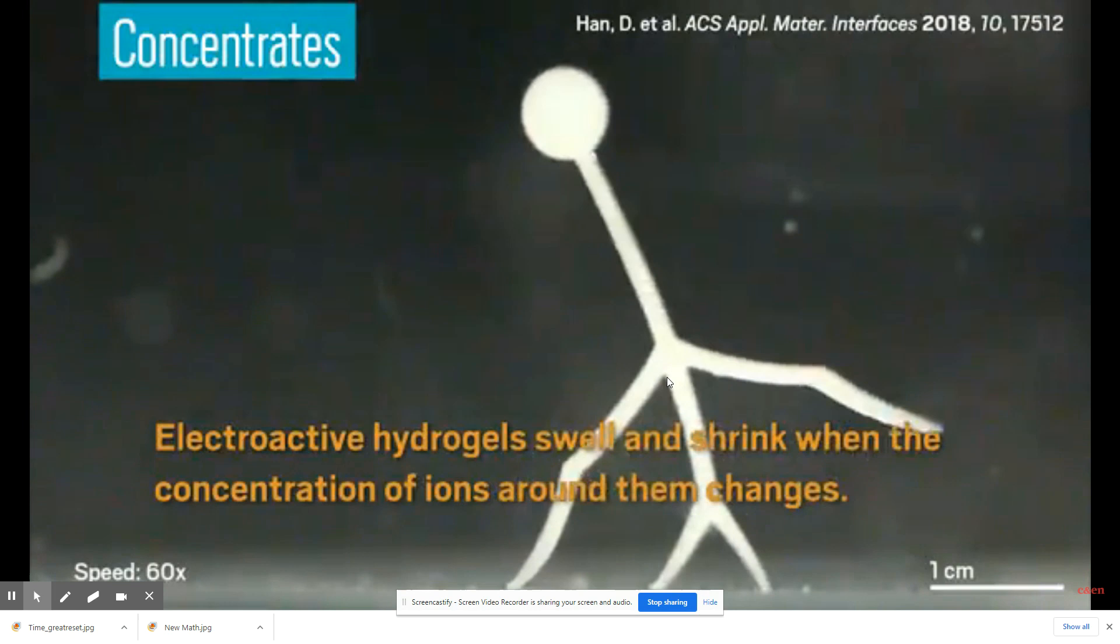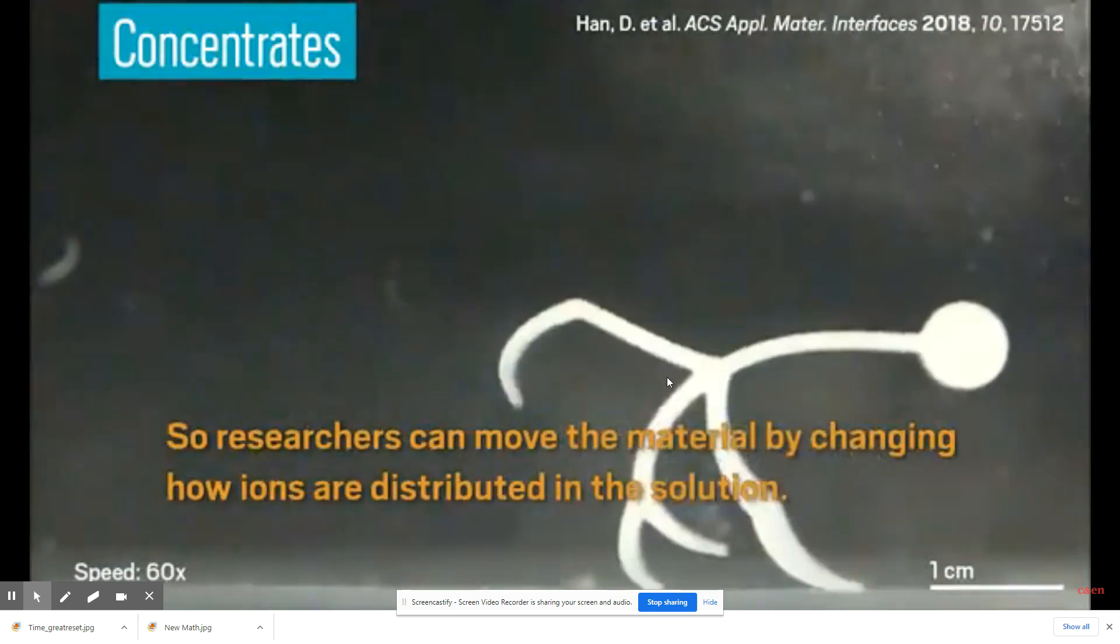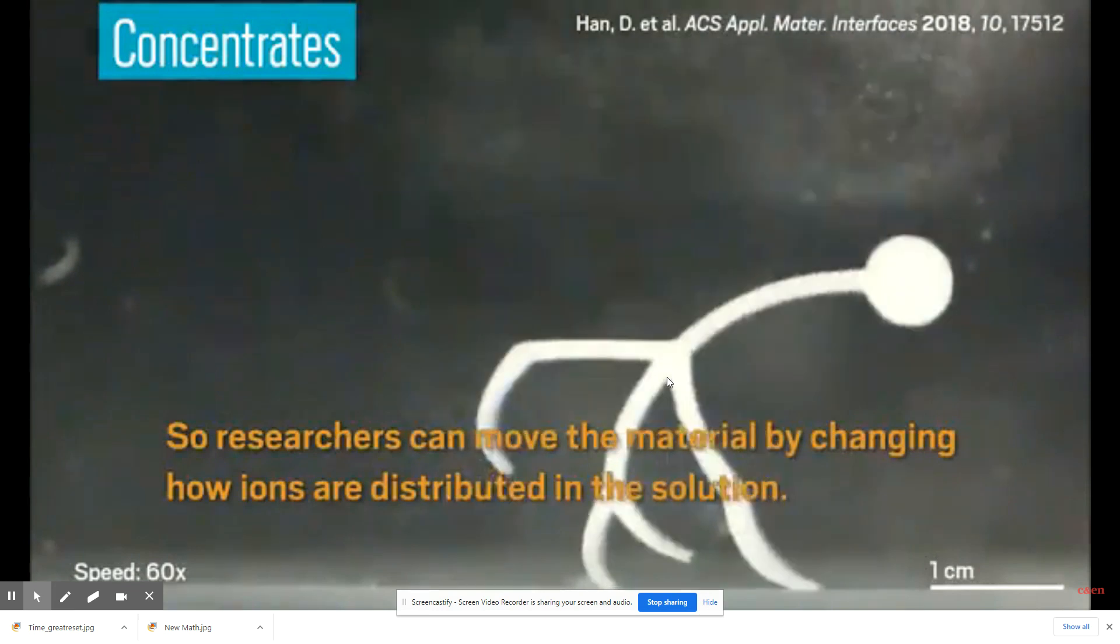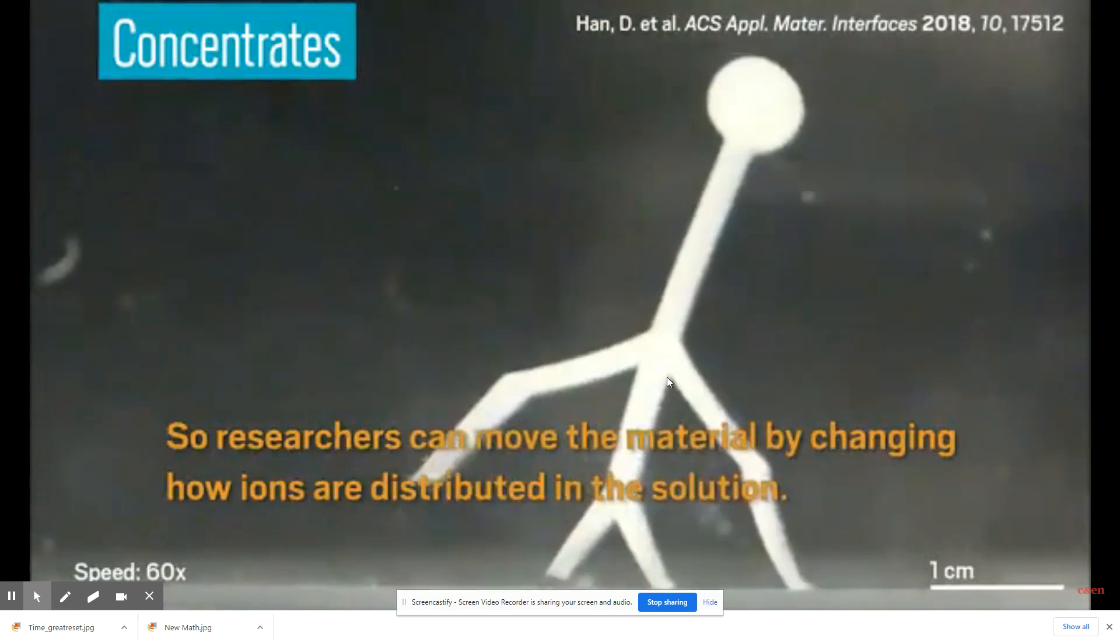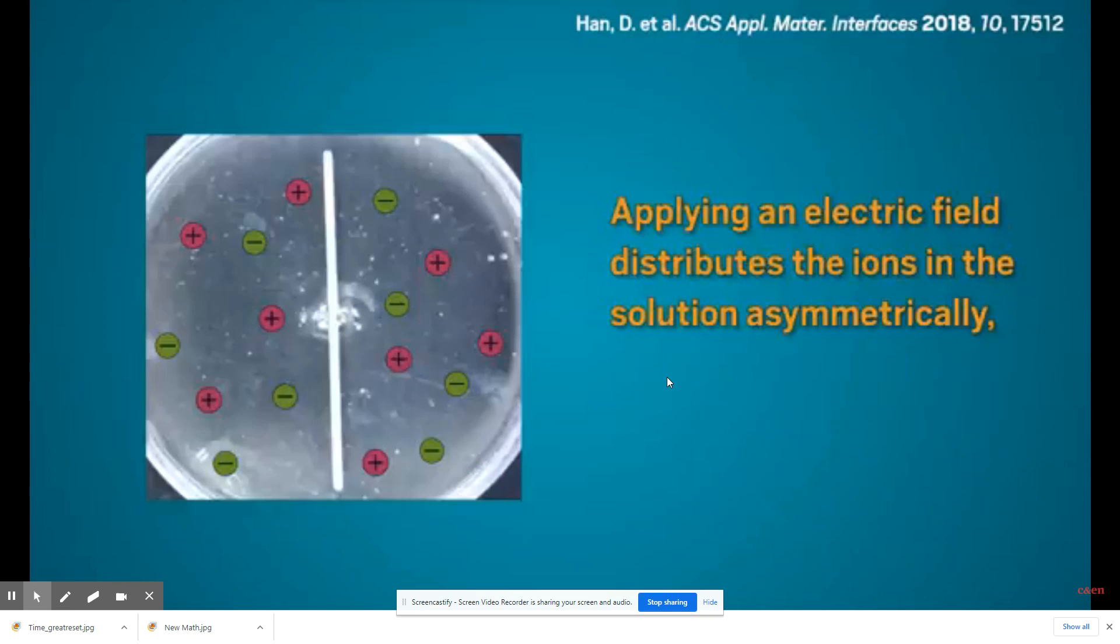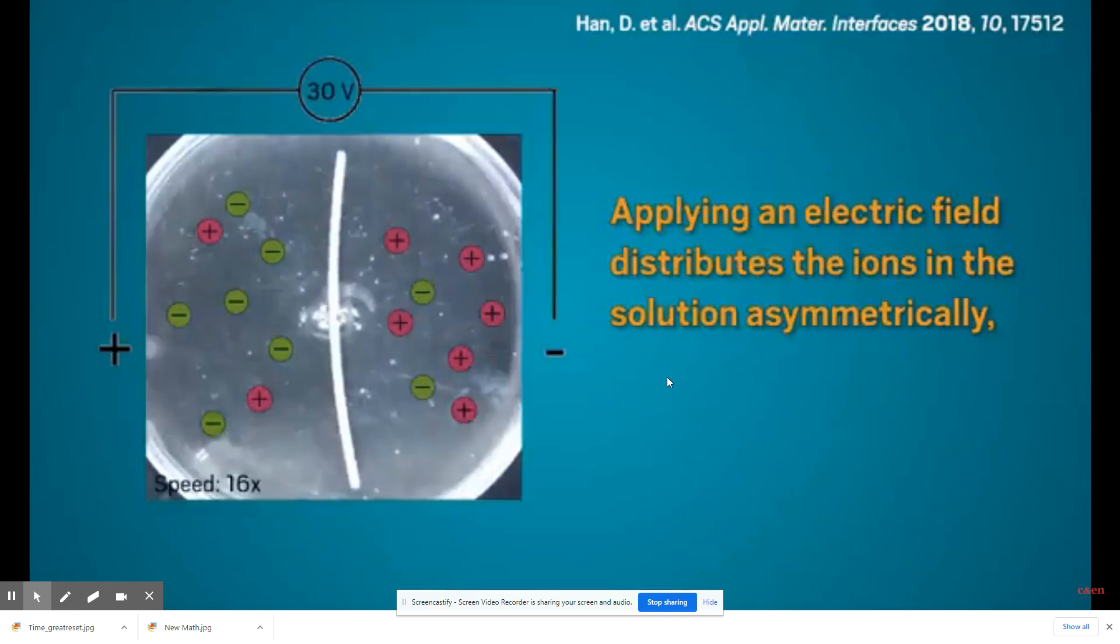So researchers can move the material by changing how ions are distributed, etc., which will be done through your cell phone and that little device you saw stuck to the person's arm or stomach. So now they're showing you how they're going to bend it. This is cool. Now this is still a couple years old.